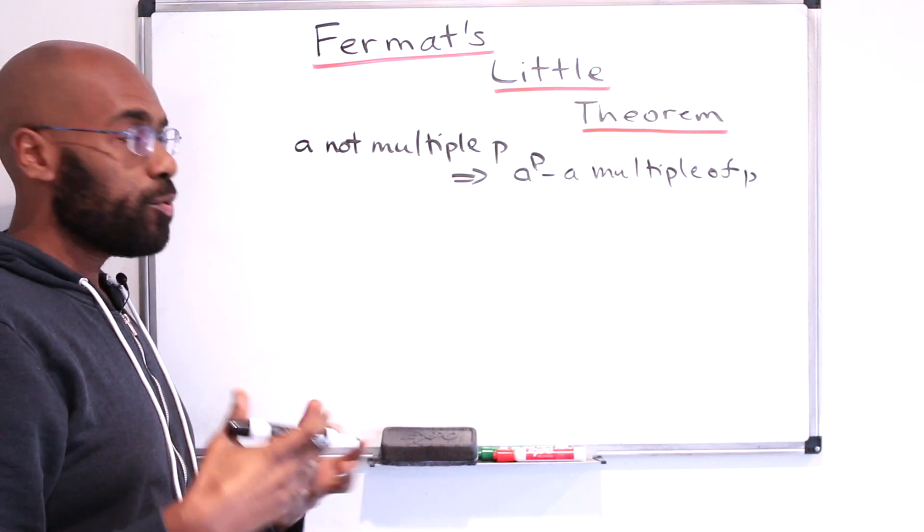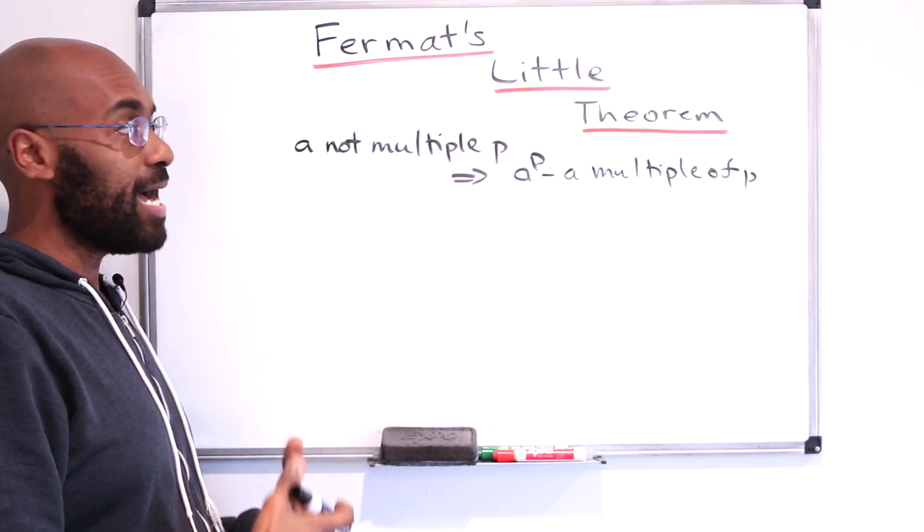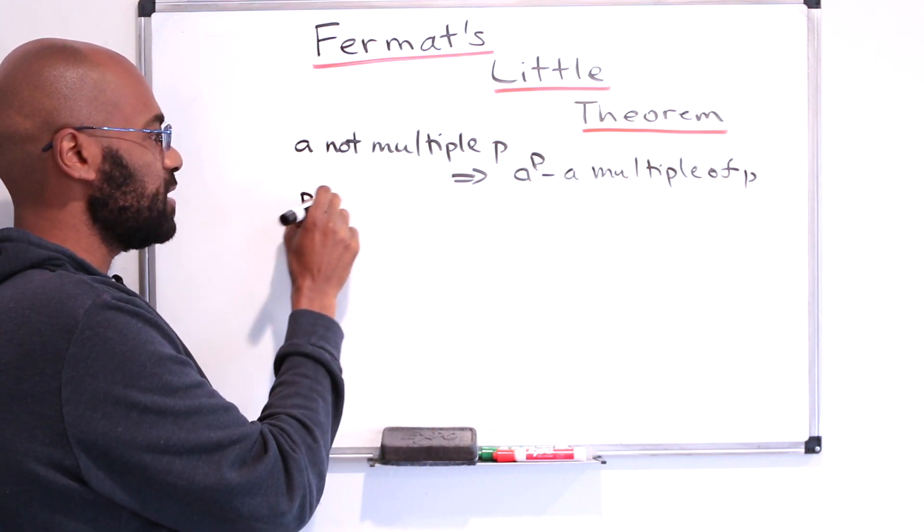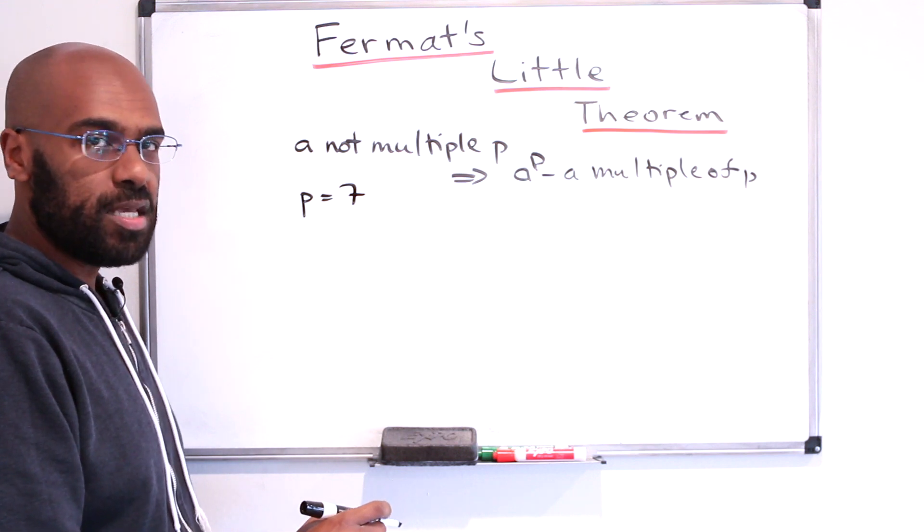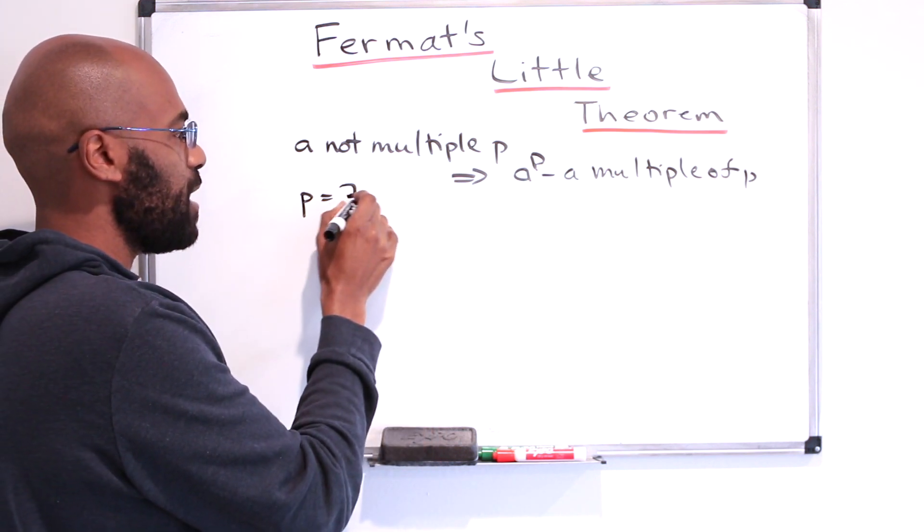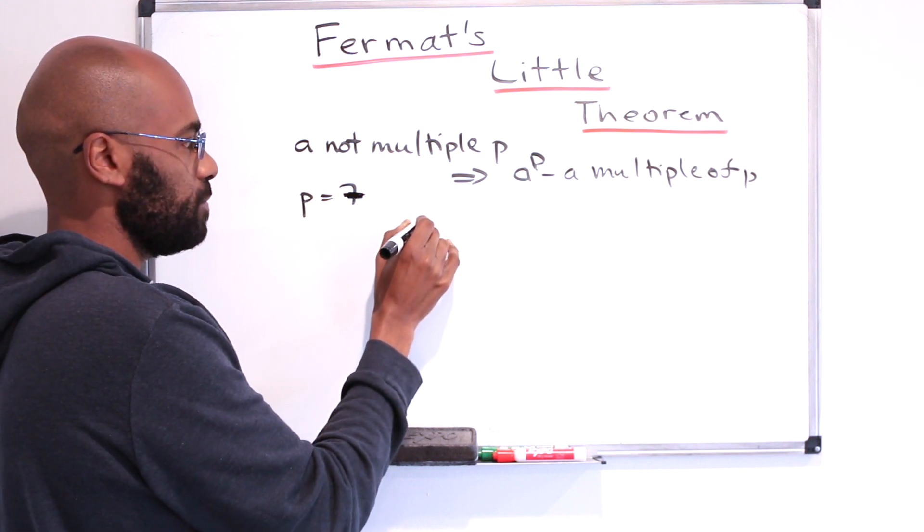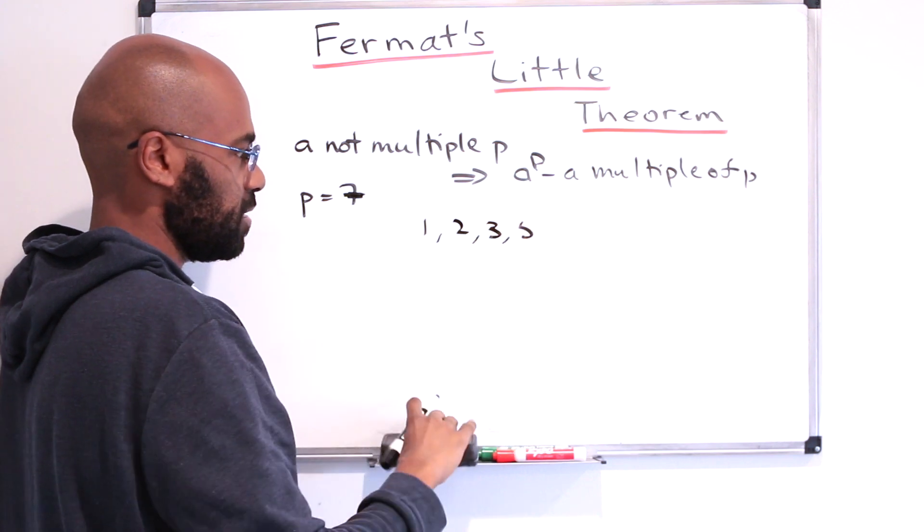Instead of giving like a general proof, what I want to do is motivate the idea, which extends naturally to the general prime case, with p equals 7. So we get an intuition of what's going on. The idea behind the proof is the following: to write down all numbers between 1 and p minus 1.